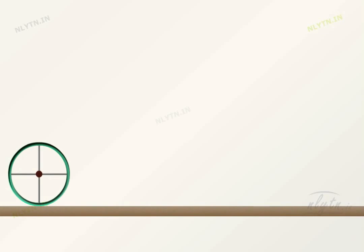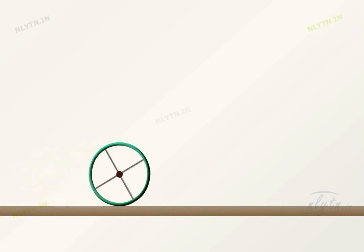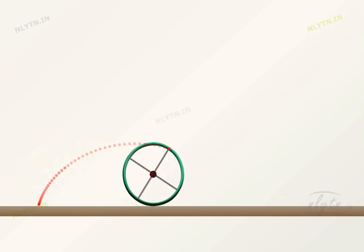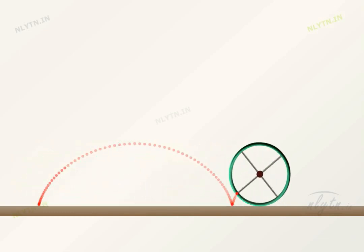A very good example of a combination of translational and rotational motion is a rolling ring. If we look at the path traced by a point on the circumference of a ring, then its motion seems to be quite complicated.